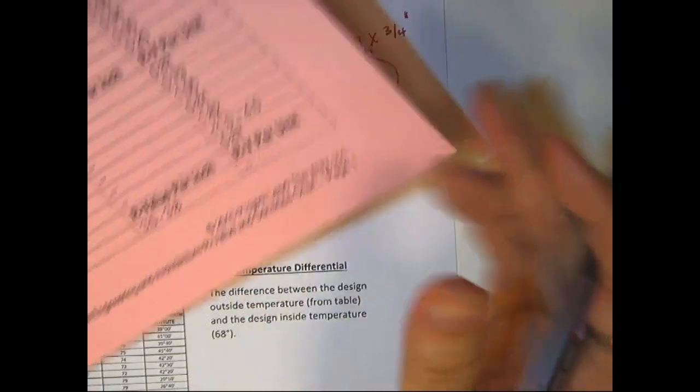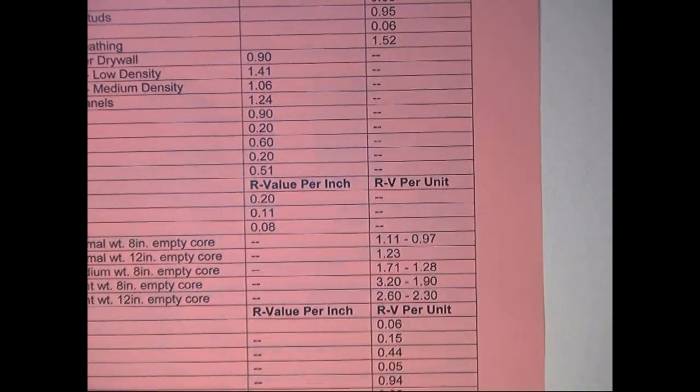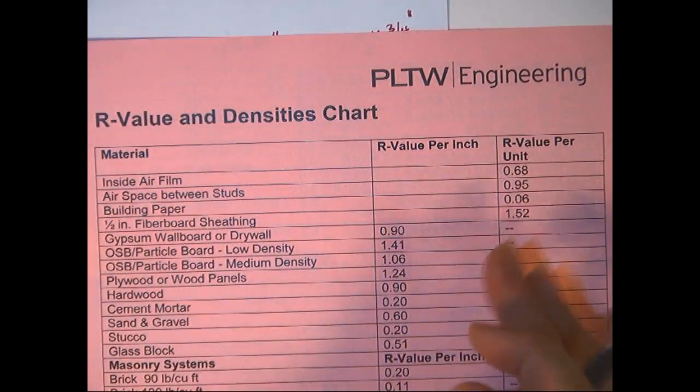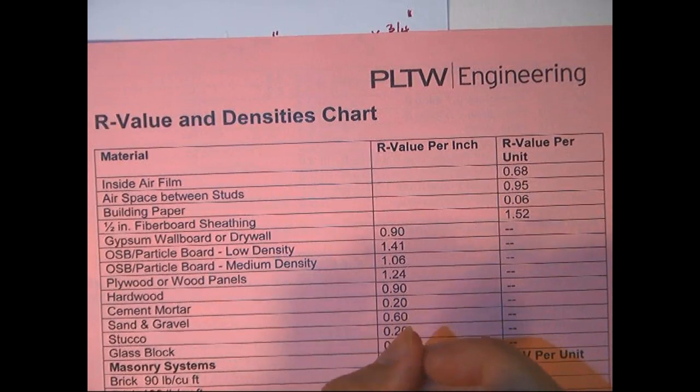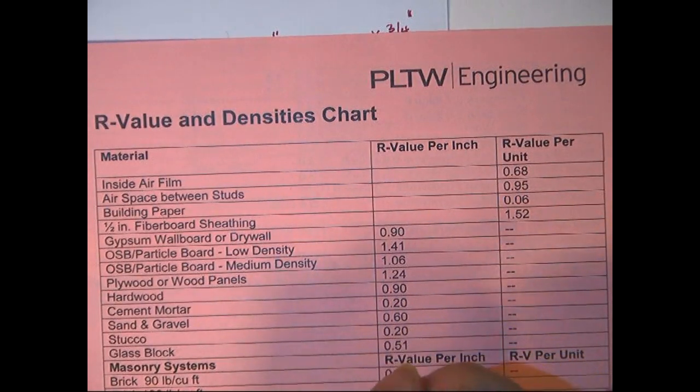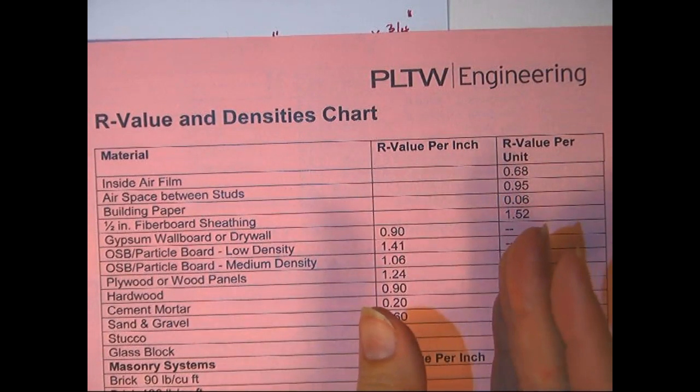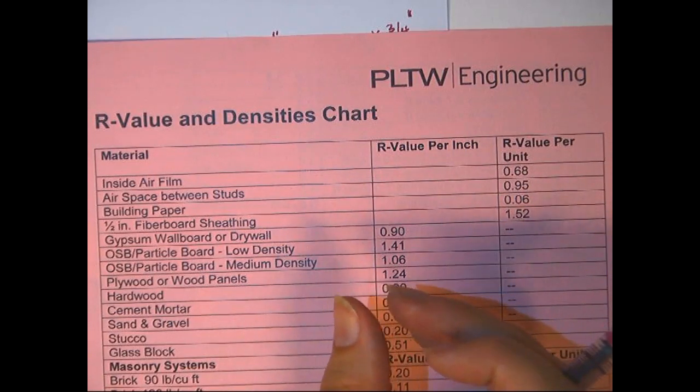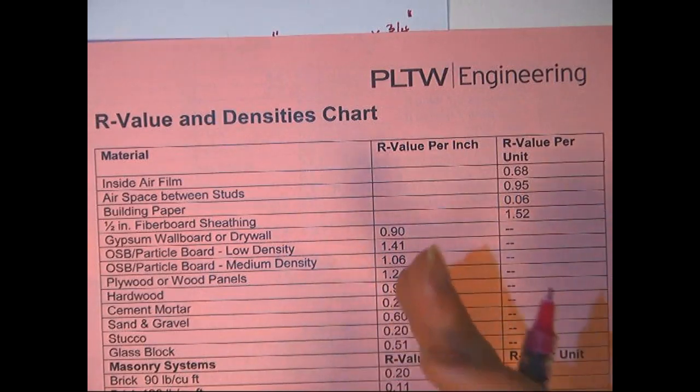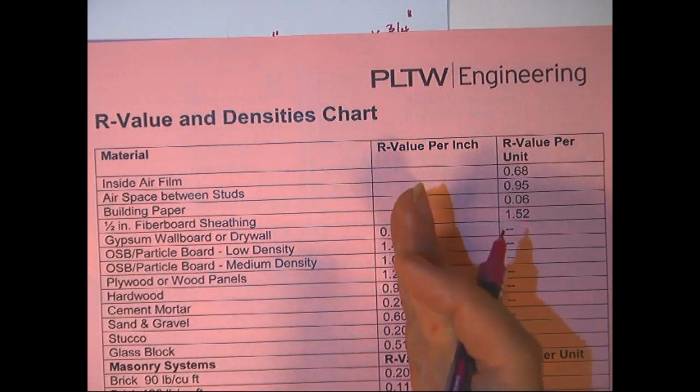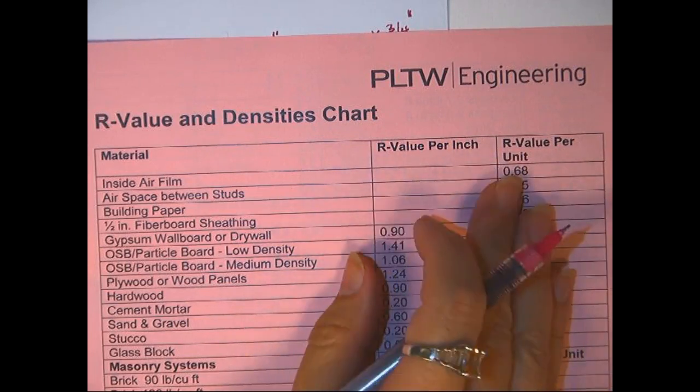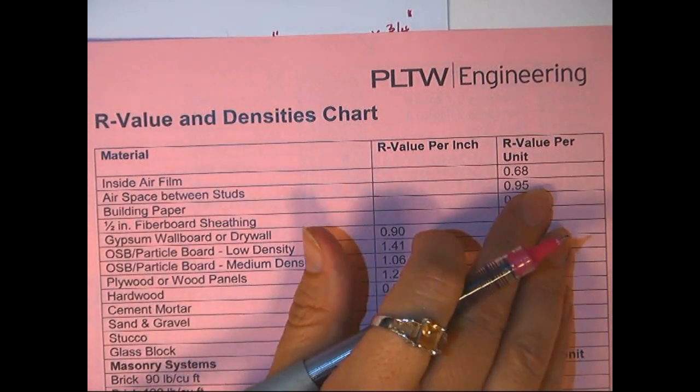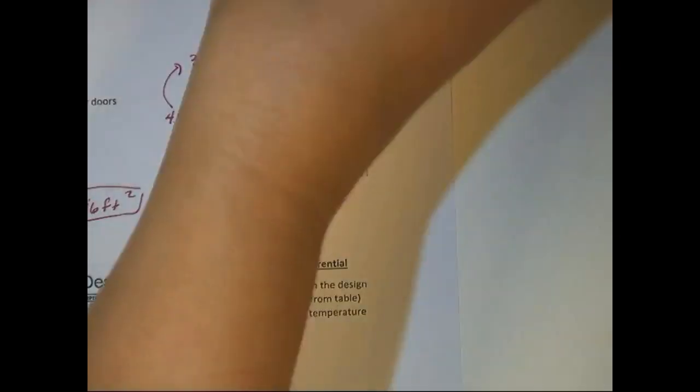Inside air film. Basically what happens is inside the room, air actually makes a very good insulation. That's why you sometimes see double-paned windows with two panes of glass with air in between it. Because air actually makes a very good insulator. What they're saying is the very thin section of air just inside the wall adds a little bit to our R value. So we just look right here inside air film 0.68. So we're going to add that total right here.